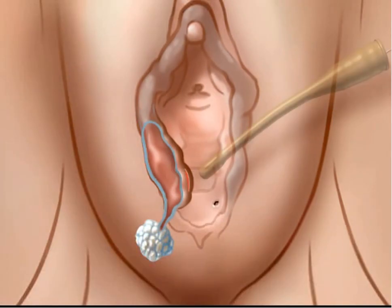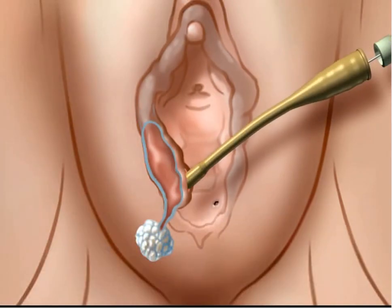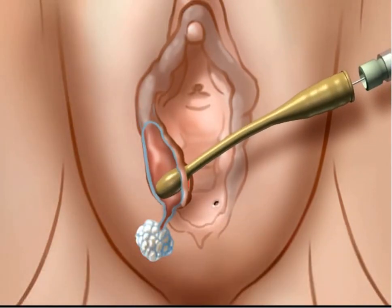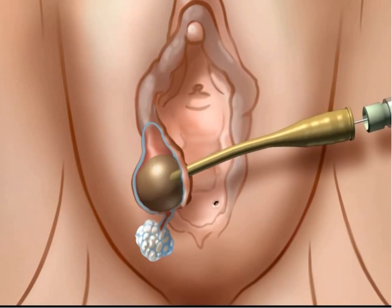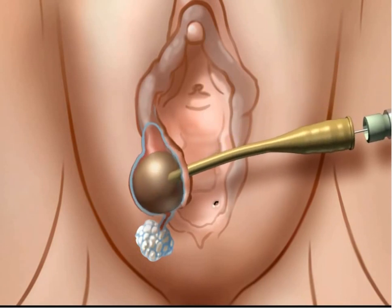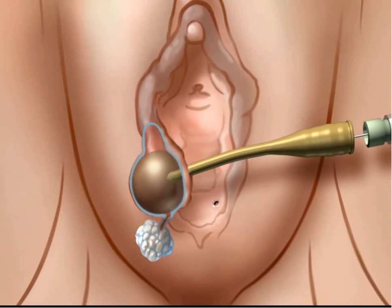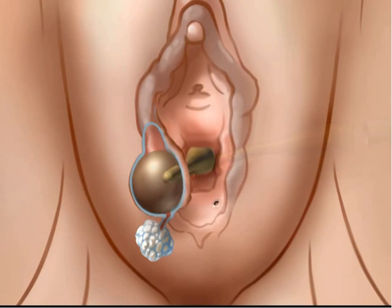The tip of a deflated word catheter is placed within the empty cyst cavity. A syringe is used to inject 2 to 3 cc's of sterile saline through the catheter port to inflate the balloon. The balloon is inflated to a diameter that will prohibit the catheter from falling out of the incision. The injection port of the word catheter can then be tucked inside the vagina, preventing the balloon from being pulled out by traction from labial movement.